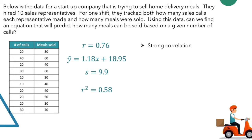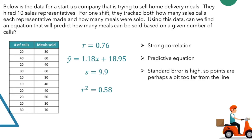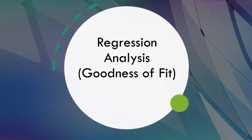So let's look at what we have. We have r equals 0.76 — it's a strong correlation. We have our predictive equation. We have the standard error — it's high, so perhaps our points are a bit too far from the line. And we know that our r squared is 0.58, so we only know about 58% of the whole story. Goodness of fit just gives you more of a picture of what your regression equation is really telling you. Thanks for being here.